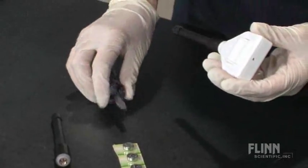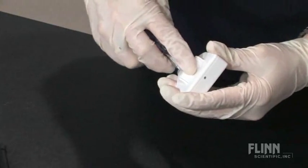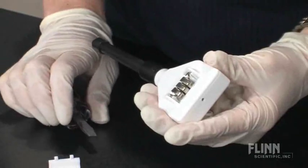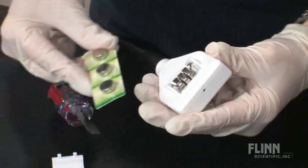On many portable pH meters, the batteries and electrodes may be changed. If you need to replace the batteries in a Flynn pH meter, remove the battery cover and replace the batteries.